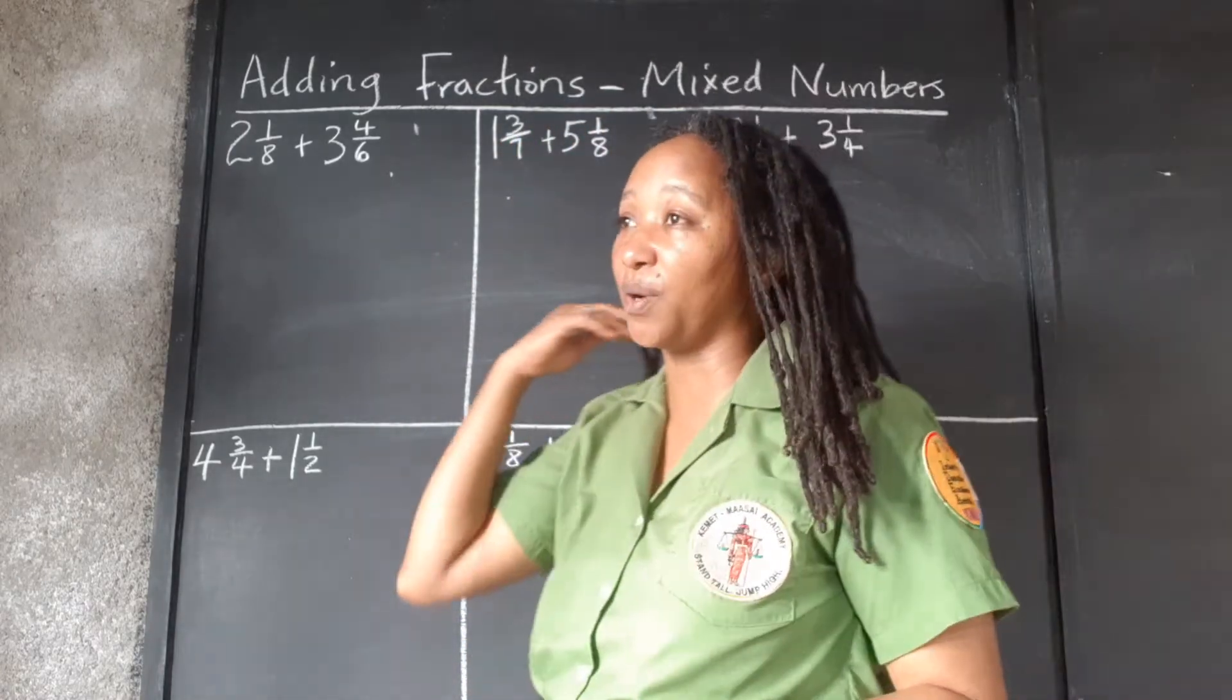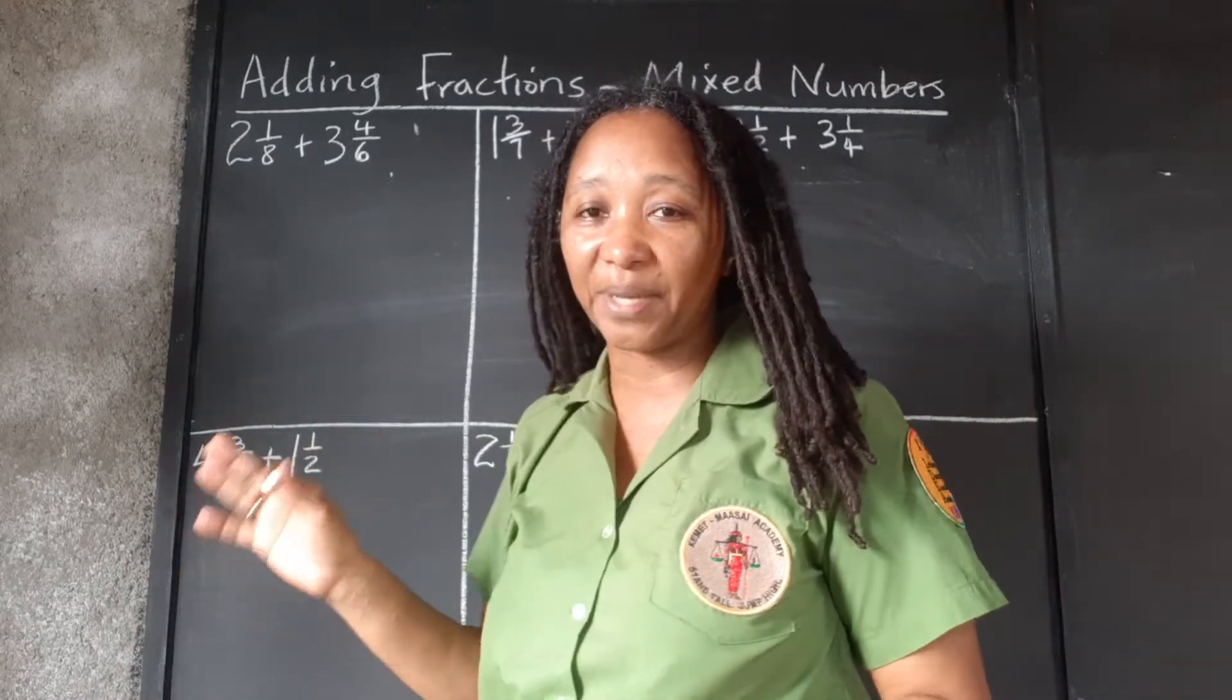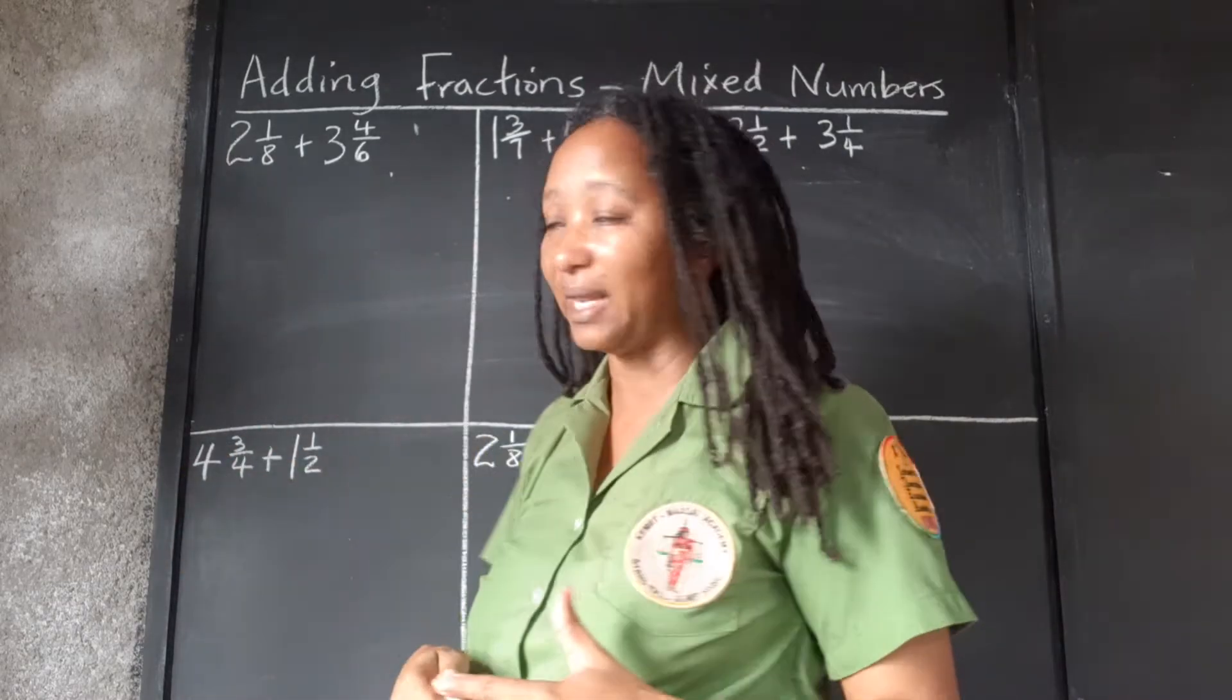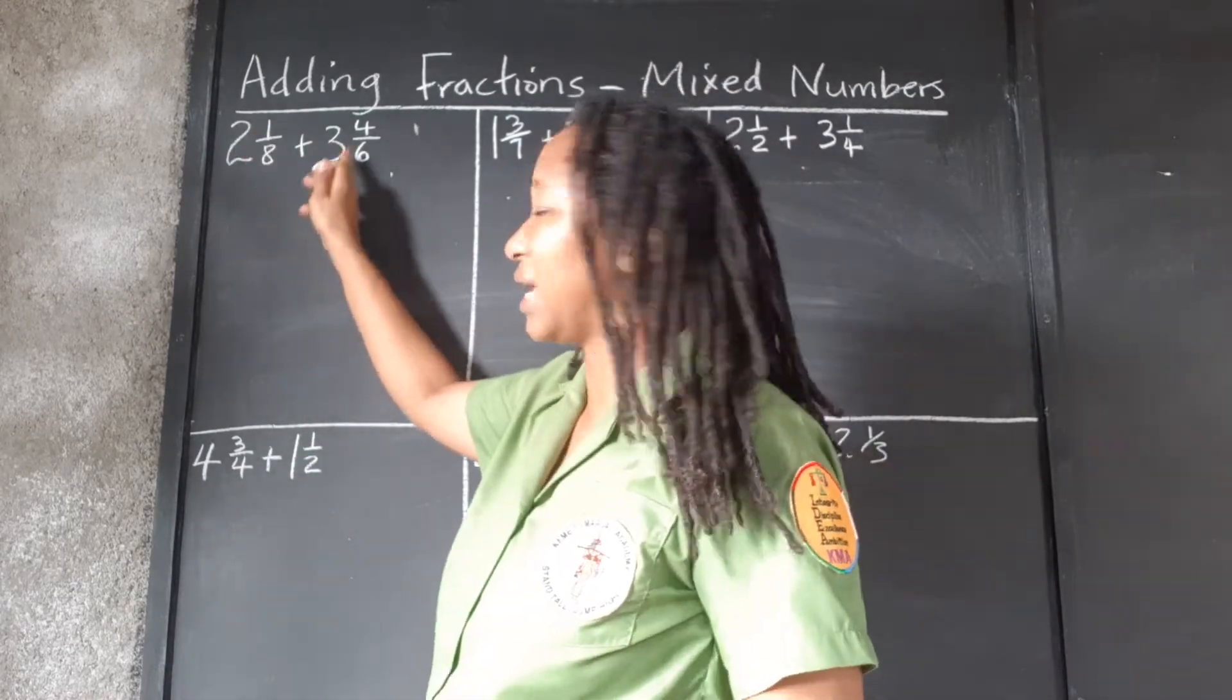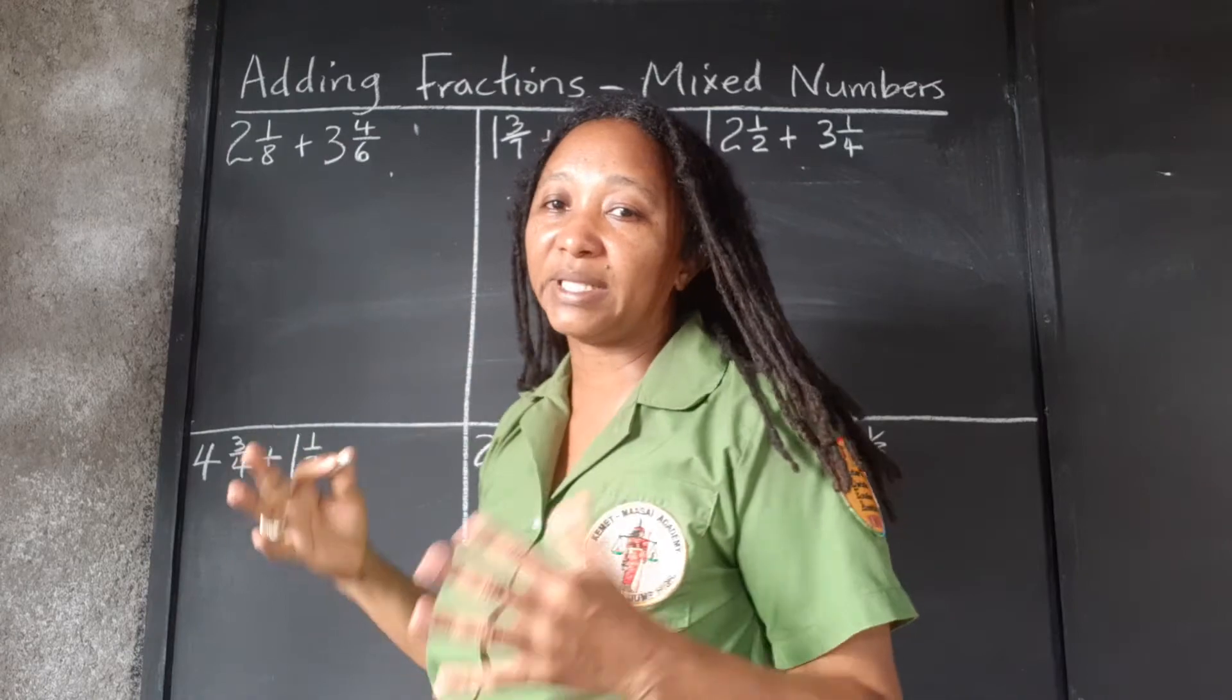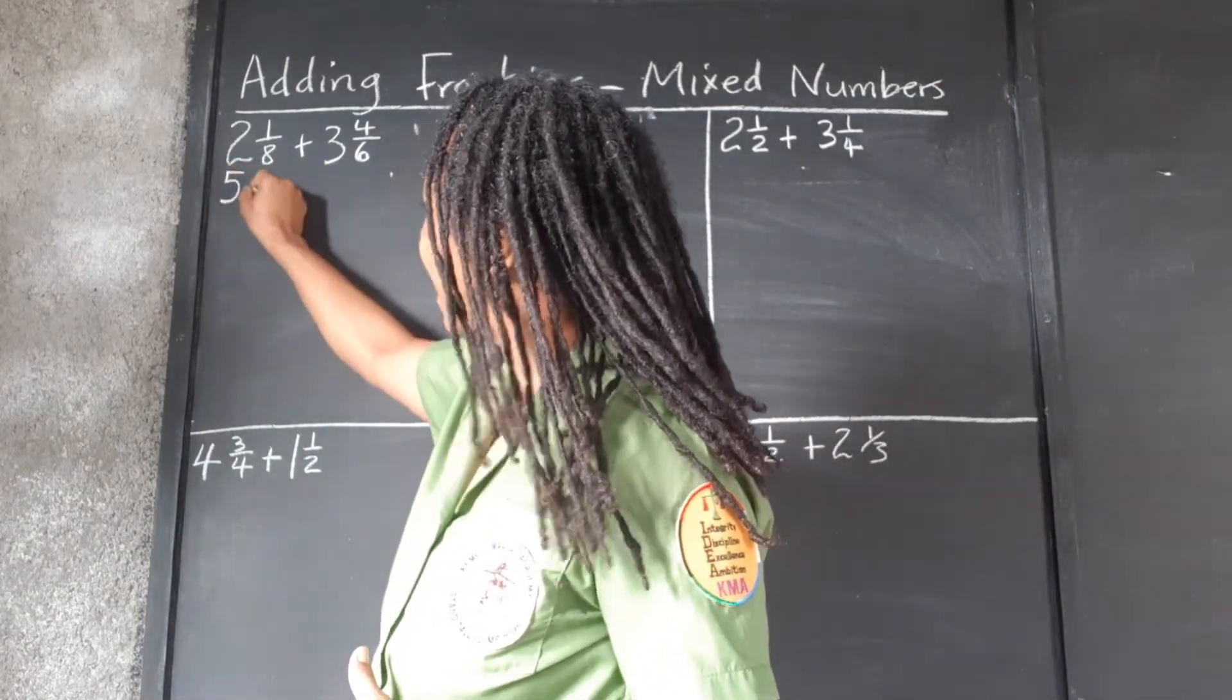So the first method we're going to add the whole numbers and add the fractional parts separately and then combine the answers. So we're going to add 2⅛ plus 3⅚. So we're going to add the whole numbers. 2 plus 3, that's 5. We'll put it to the side.